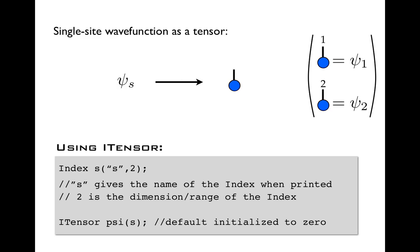Now in the tensor diagram notation introduced in the previous tutorial, this wave function, or set of wave function amplitudes, is just a single tensor with one line coming up, and that line can again take two values.